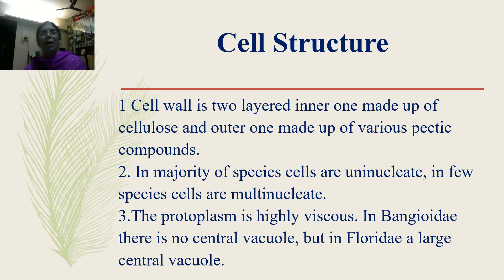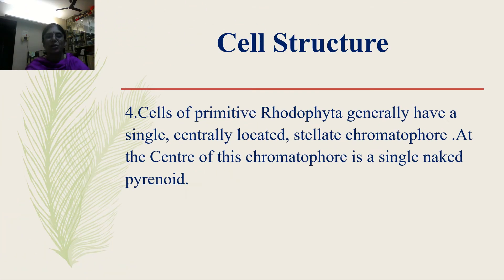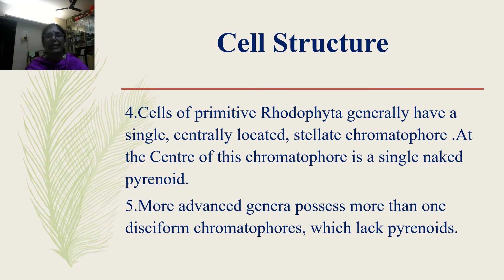The protoplasm is highly viscous. In Bangiophyceae there is no central vacuole, but in Florideae a big central vacuole can be located at the center of the cell. Cells of primitive Rhodophyta generally have a single centrally located stellate chromatophore; at the center of this chromatophore is a single naked pyrenoid. More advanced genera possess more than one disciform chromatophore, which lack pyrenoids.